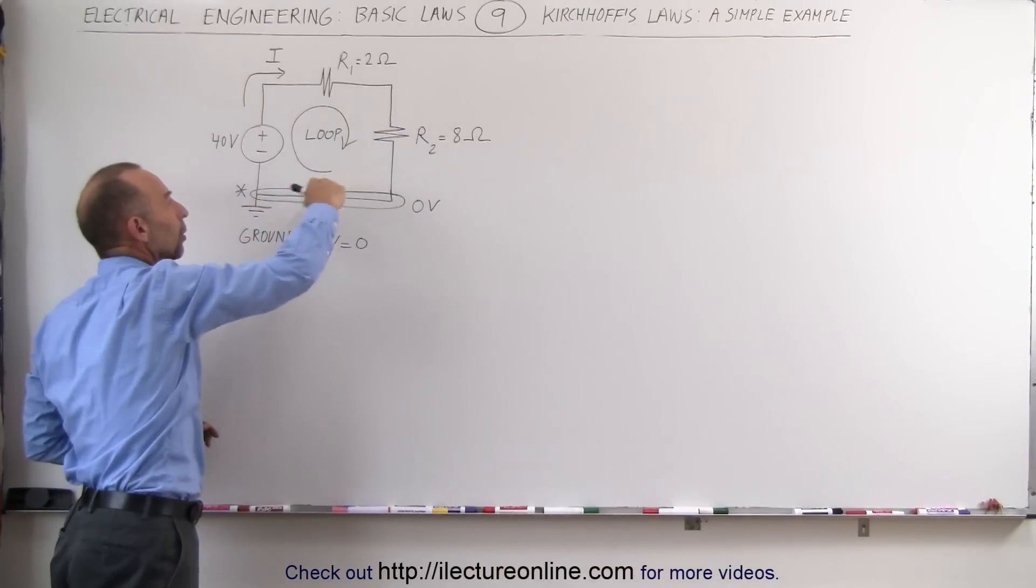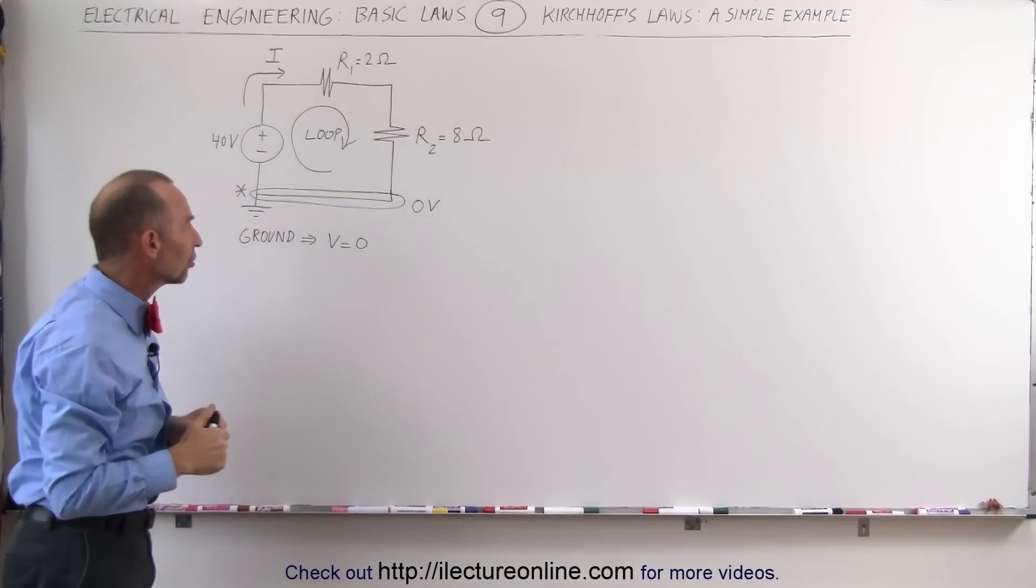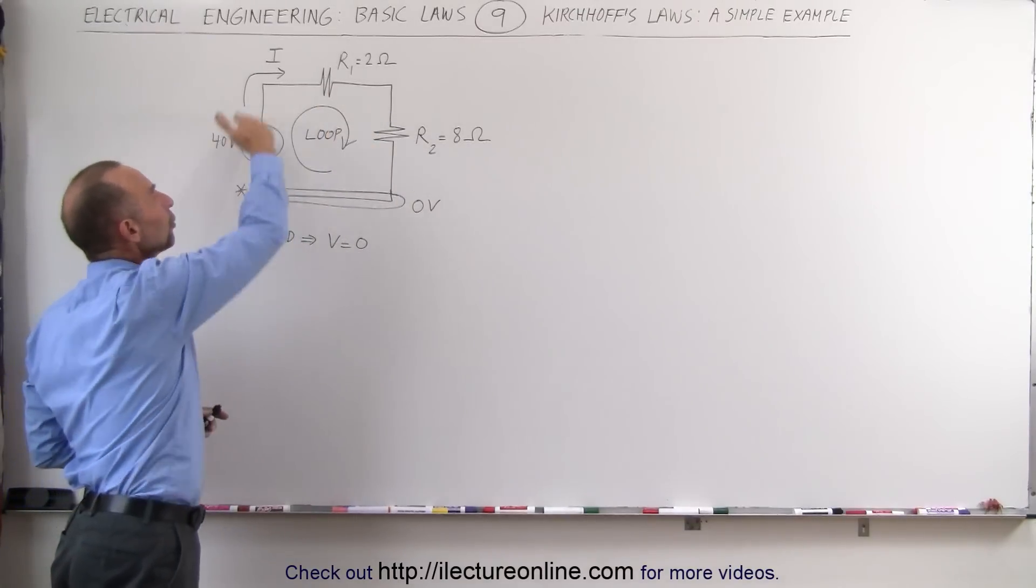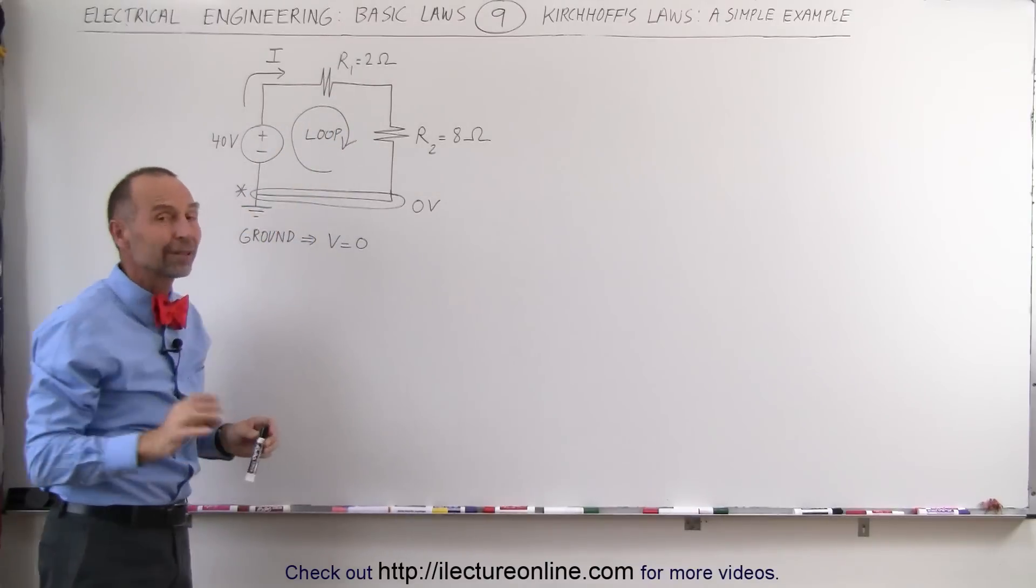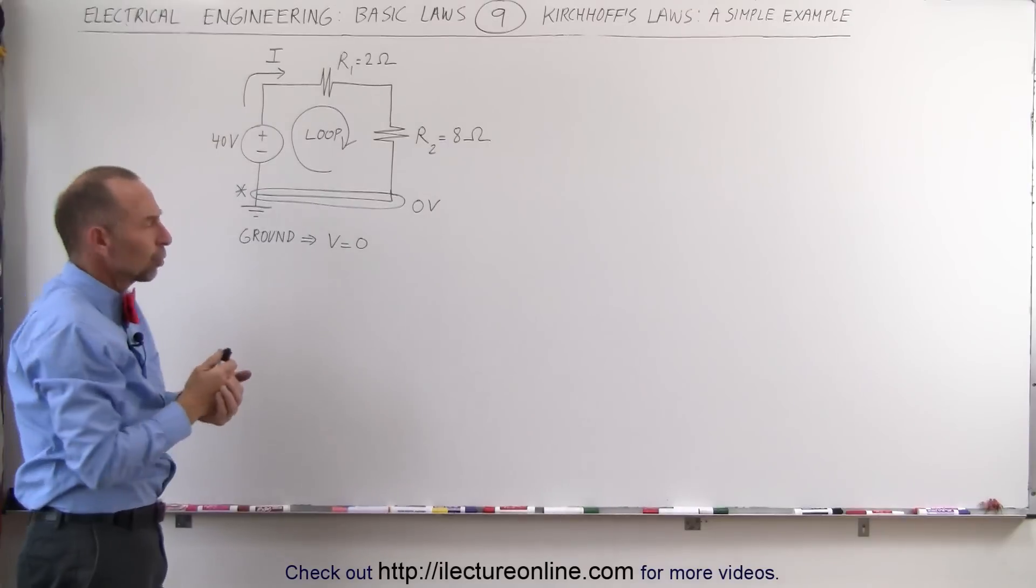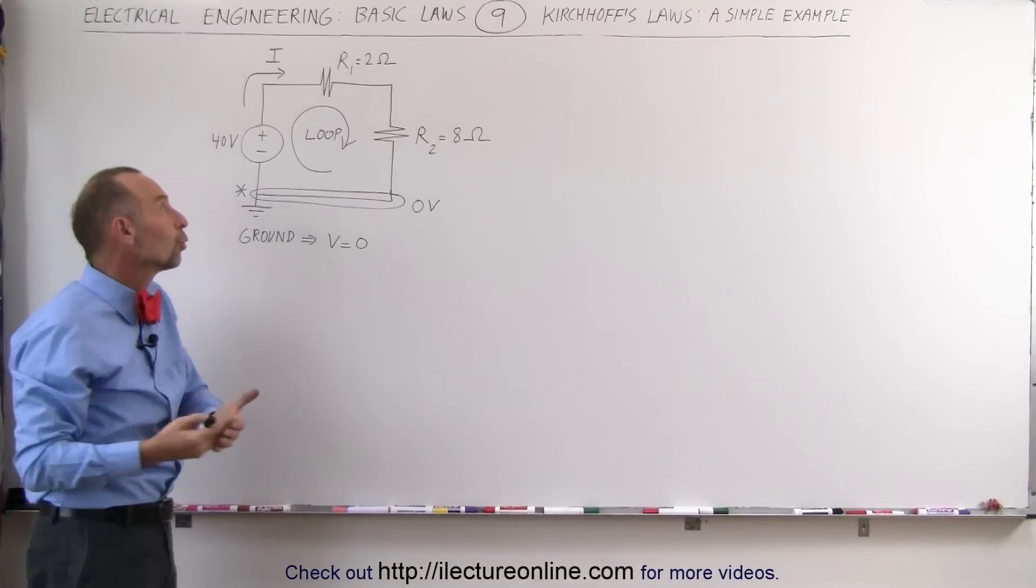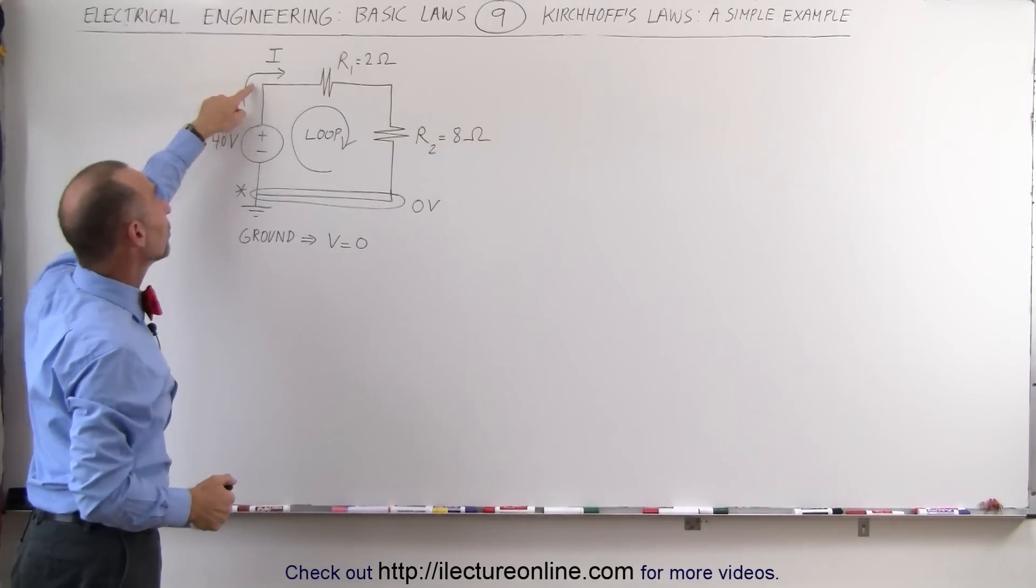We're going to travel around the loop in a clockwise direction. We sum up all the voltages around the loop and they should add up to zero. That is that rule. But what about the currents? Can we use Kirchhoff's rules on currents?